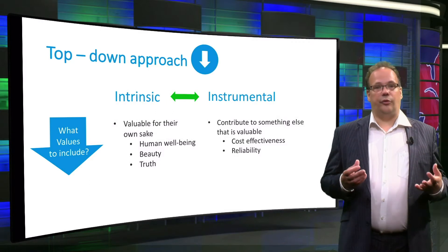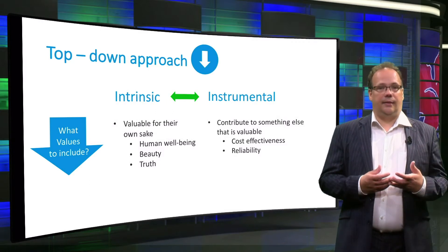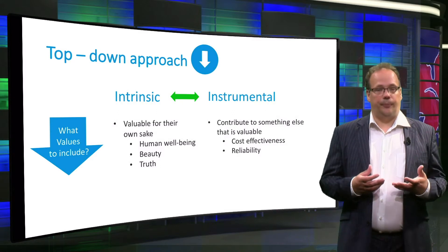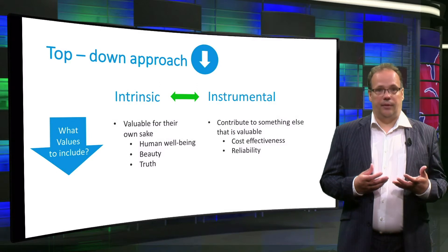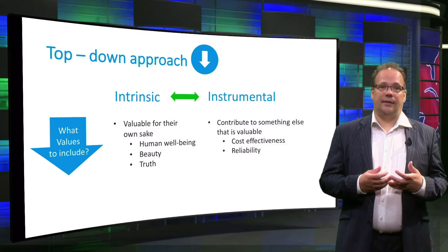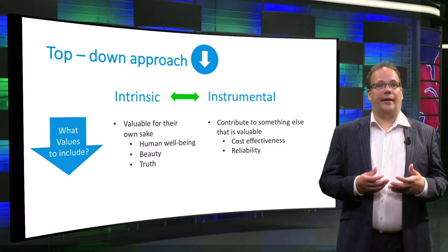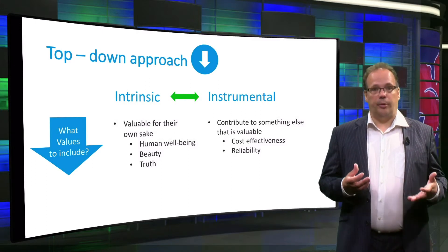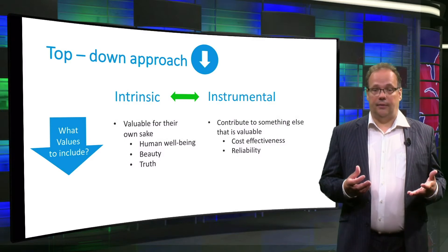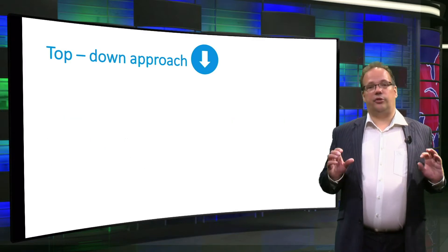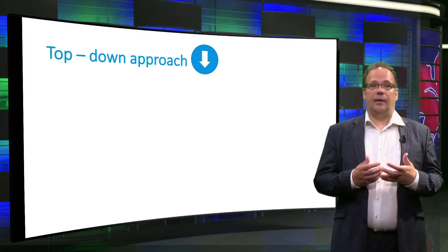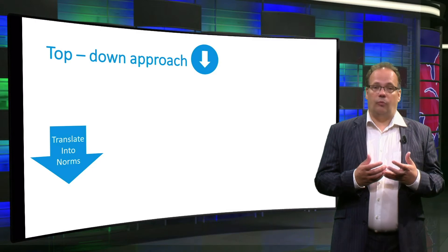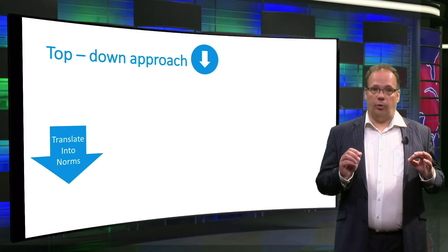Sometimes values can be intrinsic and instrumental at the same time. Take for example the values of speed and efficiency. They clearly have an instrumental value — taking less time to travel and using less resources for the same outcome. Yet, some engineers also see these values as intrinsically good and desirable, not because of what they help us to achieve, but for their own sake. Once the values are known, they have to be translated into norms. This can be done by asking the question: what would be a proper response to this value?